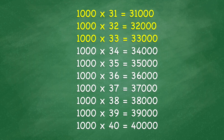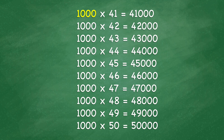1,000 times 33 equals 33,000. 1,000 times 34 equals 34,000. 1,000 times 35 equals 35,000. 1,000 times 36 equals 36,000. 1,000 times 37 equals 37,000. 1,000 times 38 equals 38,000. 1,000 times 39 equals 39,000. 1,000 times 40 equals 40,000.